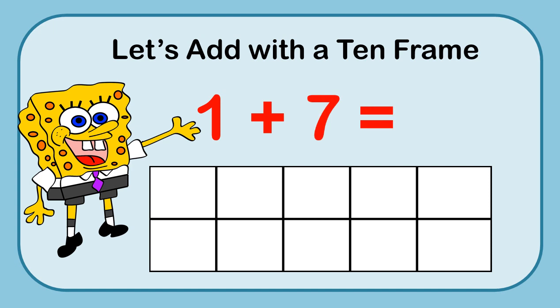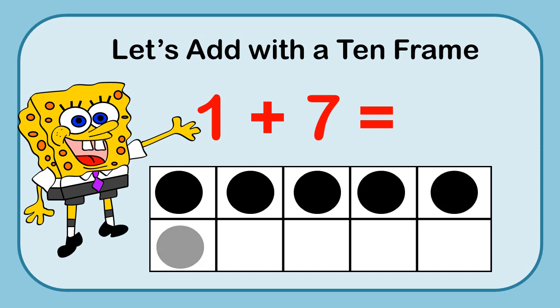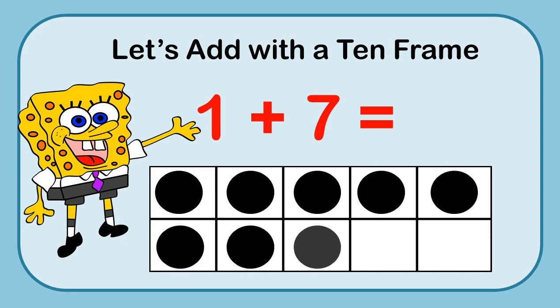Here we go looking at the next problem: 1 plus 7. Put one marker and then 7 more: 1, 2, 3, 4, 5, 6, 7. I can count them all: 1, 2, 3, 4, 5, 6, 7, 8. Or I can say there's 5, and then 6, 7, 8. Either way, 1 plus 7 equals 8.